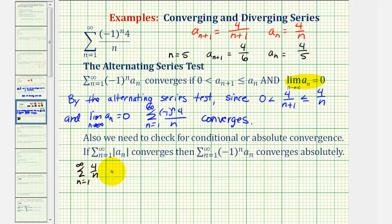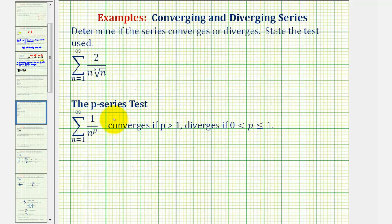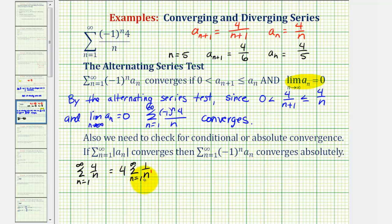We want to determine if the infinite series where a sub n is four divided by n converges or diverges. We can factor out the four and write this as four times the infinite series where a sub n is one divided by n. This should remind us of the p-series test, where p is equal to positive one. The p-series test tells us the series converges if p is greater than one, but diverges if p is greater than zero and less than or equal to one. Therefore, this series diverges by the p-series test with p equal to one, and the original alternating series only converges conditionally.